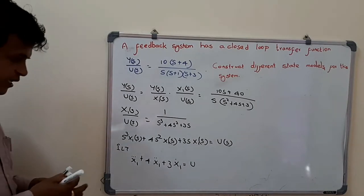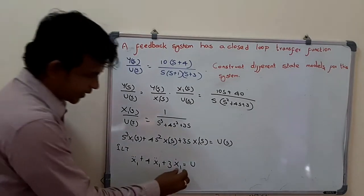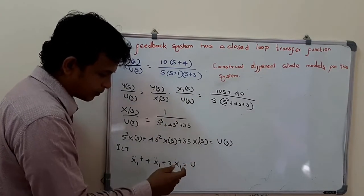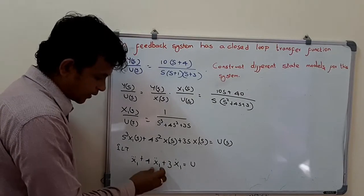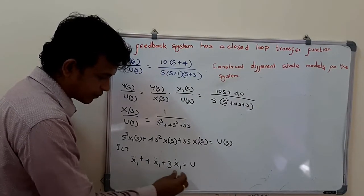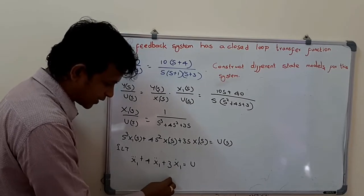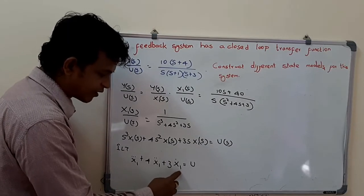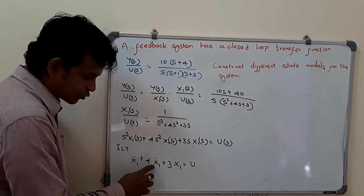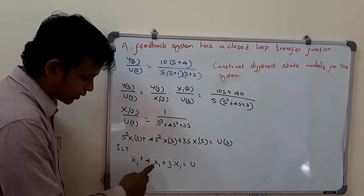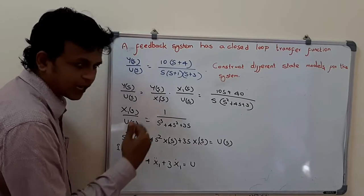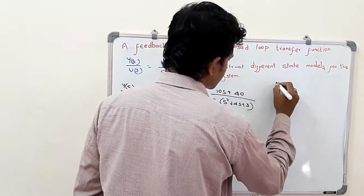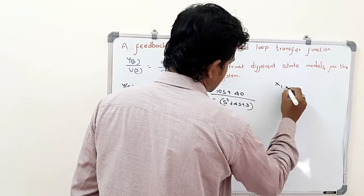Now we have to assign state variables. We are assigning three state variables. x1 is one state variable since x1 dot is its first derivative. x1 double dot has another first derivative x1 triple dot, so x1 dot is assigned as another state variable x2. Similarly, x1 double dot is assigned with state variable x3.